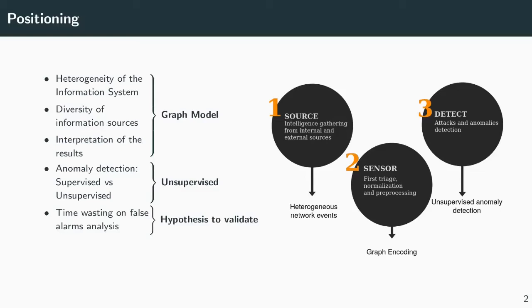We identified five challenges to address. First, the information system is heterogeneous, which makes it hard to supervise. Second, there are diverse types of information sources. Third, it is difficult to interpret the results of intrusion detection systems based on anomaly detection. All of this can be summarized in one question: How can we construct a good behavior model? And my answer is the graph model.